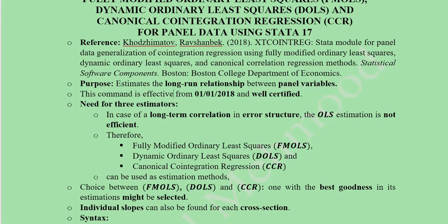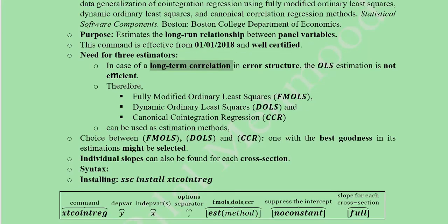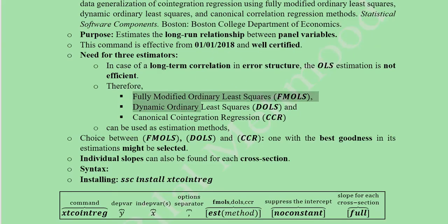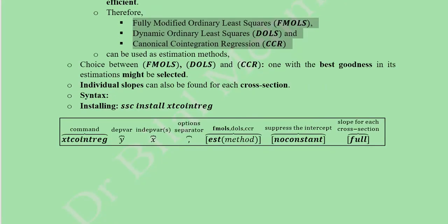This command has been in effect since its release date and is well certified. There are three estimators we can calculate using this command. The long-term correlation in error structure is the reason for using these estimators, because ordinary least squares is not efficient in addressing long-term correlation.